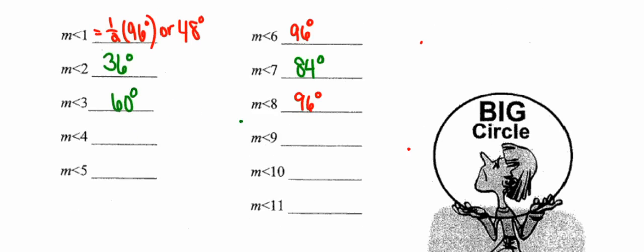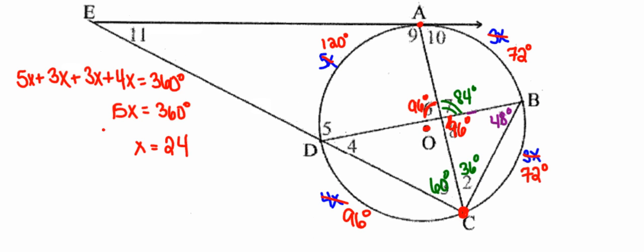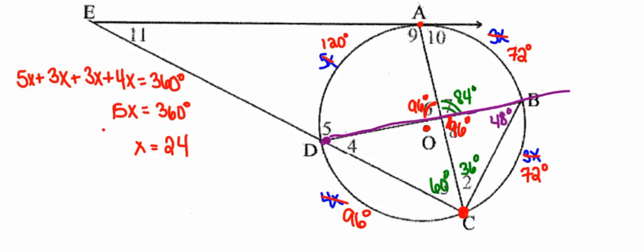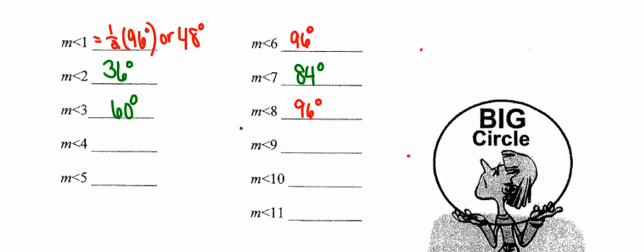Angle 4 is next. Angle 4 has its vertex on the circle and its sides are chords, making it an inscribed angle. Its degree measure is half that of its intercepted arc. The intercepted arc between the sides of the angle is 72 degrees. Half of 72 gives a degree measure for angle 4 of 36 degrees. I'll label that in the picture and record the answer.